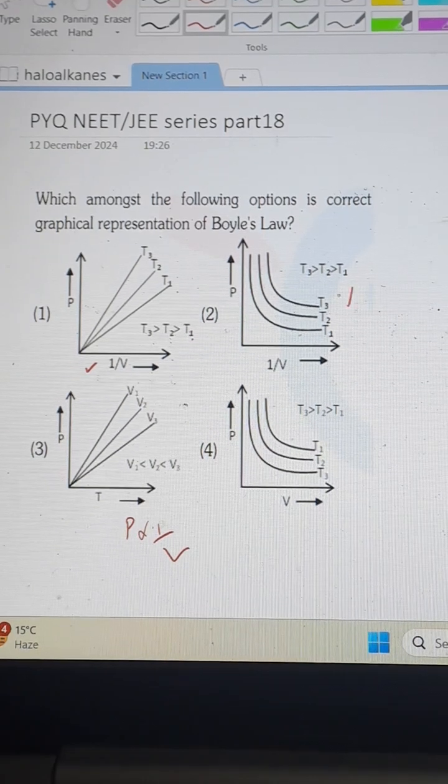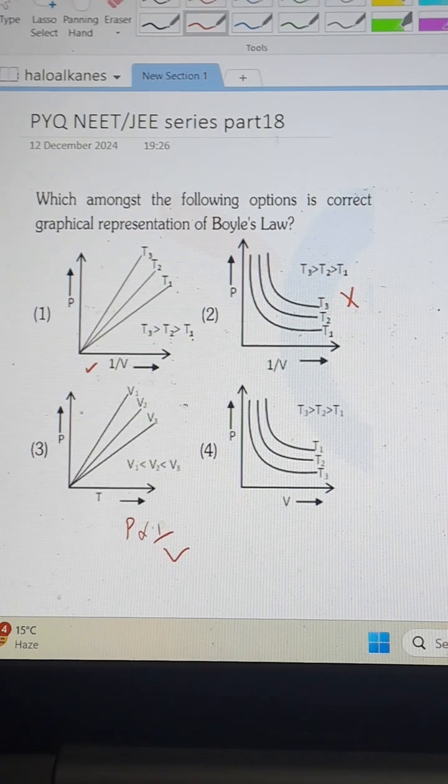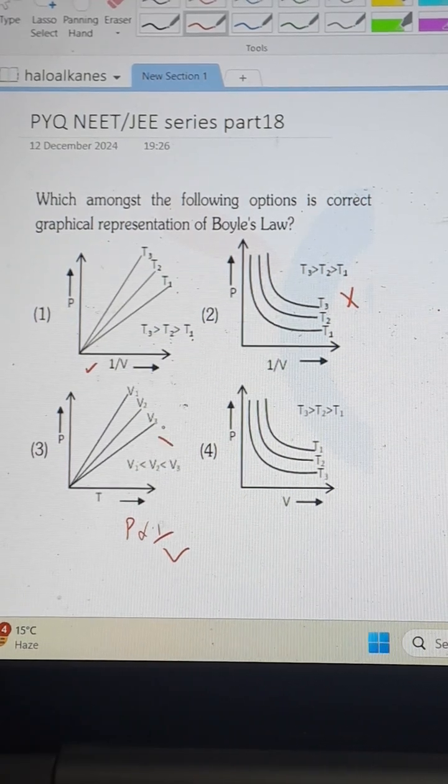Second one P versus 1 by V, the curved graph not correct. P versus T, it is Gay-Lussac's law. So, not correct for our answer.